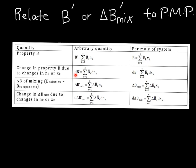Our next row is giving us the change in B, so how B changes if we add more stuff. The third row gives us delta B of mixing, and the last row gives us how delta B of mixing changes if we add more stuff.